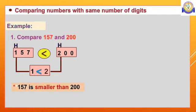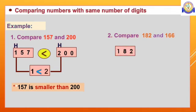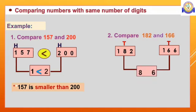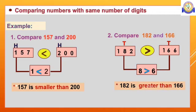Now, see here second example. Compare 182 and 166. Both having 3 digits. First compare hundreds place digit. At hundreds place, both having same digits. At that time, we should check tens place digit. Tens place having 8 and 6. Compare them. 8 is greater than 6. That means 182 is greater than 166.